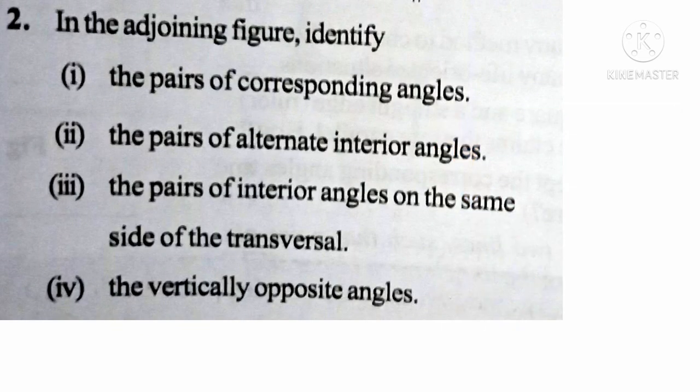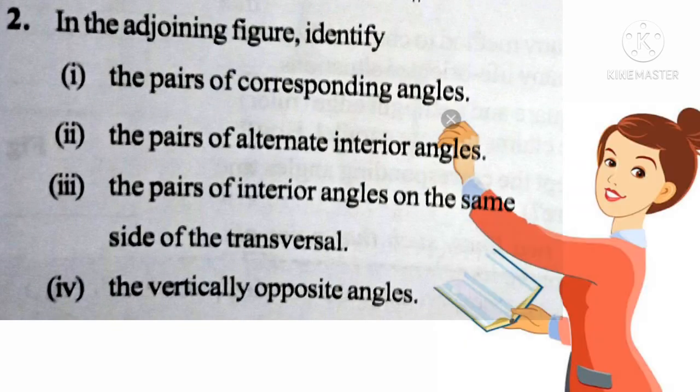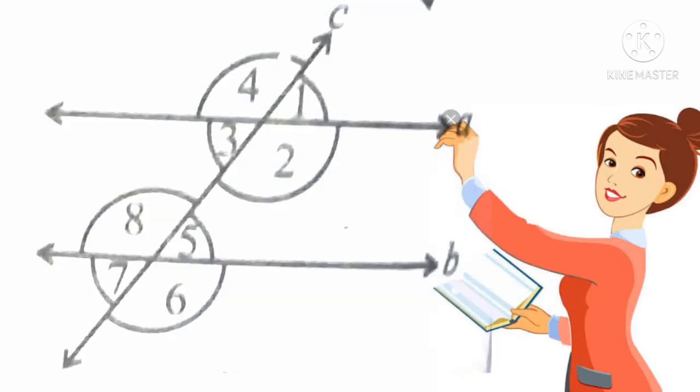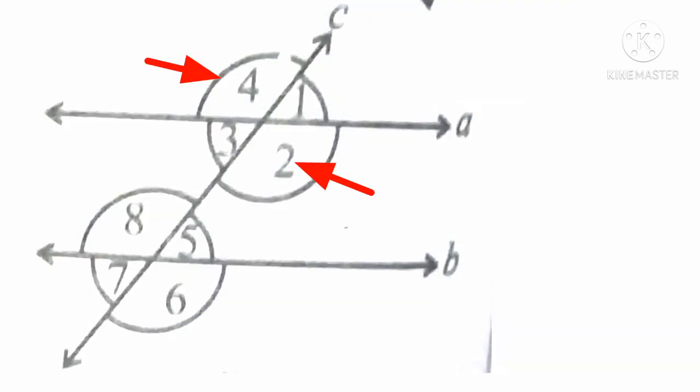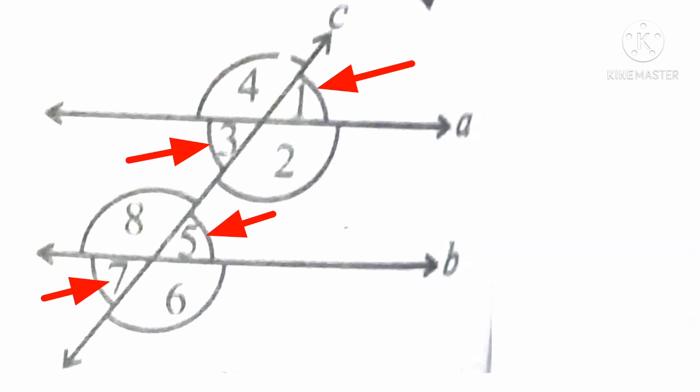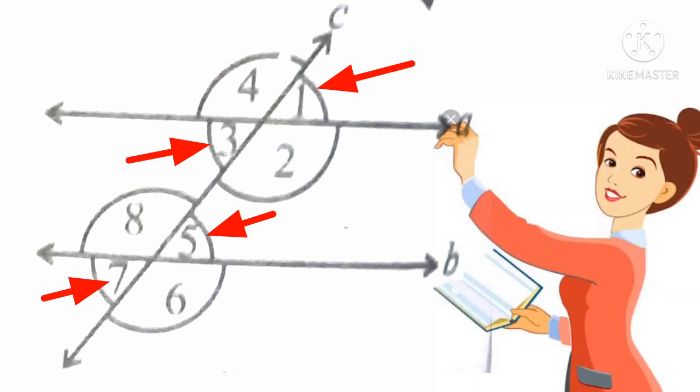Fourth: the vertically opposite angles are angle 4 and angle 2, angle 1 and angle 3, and angle 5 and angle 7.